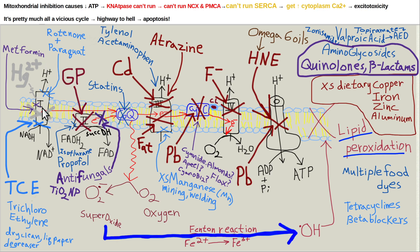A lot of doctors ask me, 'Oh, I heard metformin is so good — it's good for aging.' The mitochondrial oxidative stress theory of aging is that you damage the mitochondria. So the idea that you're going to damage mitochondria and improve aging by that — I doubt it.